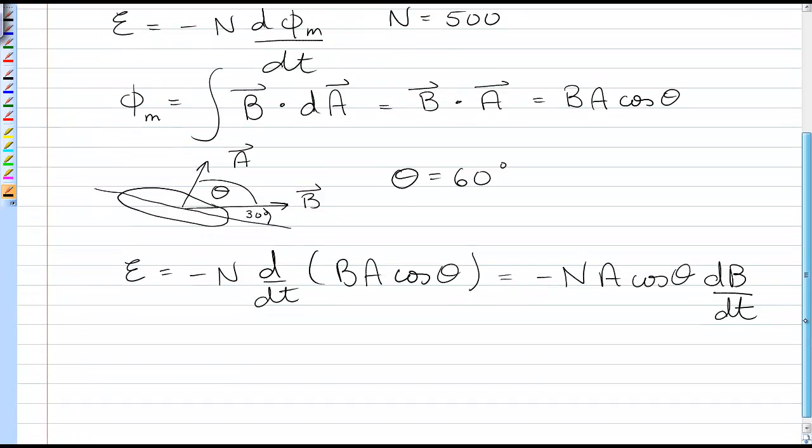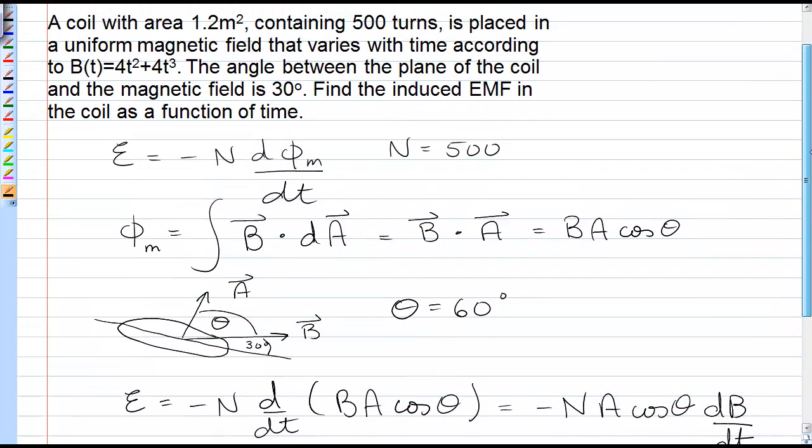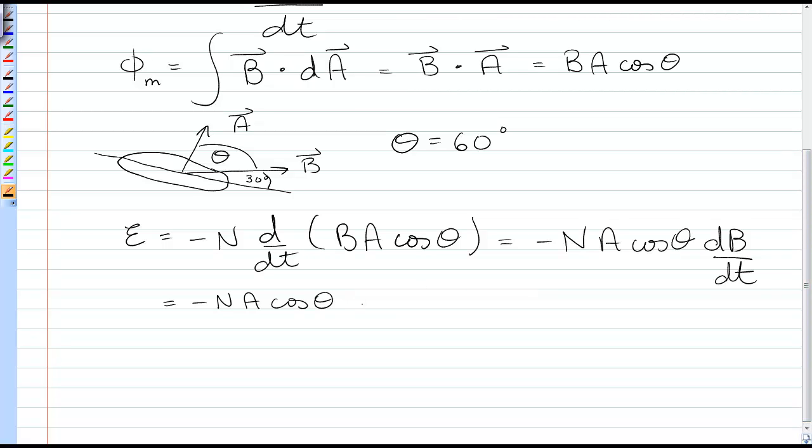So we have to take the derivative of the magnetic field with respect to time to get the EMF. The derivative of B would be d by dt of 4t squared plus 4t cubed. That's the magnetic field, which just gives us negative n A cos theta 8t plus 12t squared.